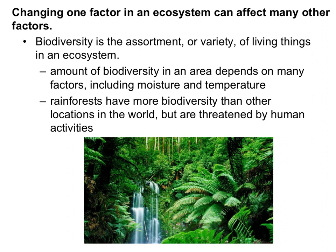Biodiversity is the assortment or variety of living things in an ecosystem. The amount of biodiversity in an area will depend on many factors, including moisture and temperature. The less extreme an area is, the more biodiversity it will have — if it's not incredibly dry and not incredibly hot or cold, it's going to have more biodiversity. Rainforests, which have temperate conditions and a ton of water, have more biodiversity than any other locations in the world. However, they are threatened by human activities, which is reducing their biodiversity.